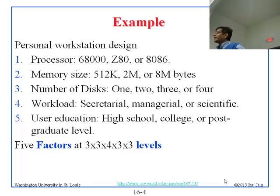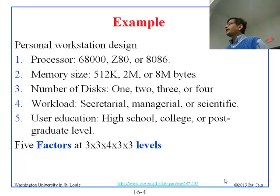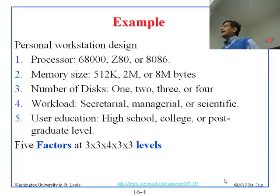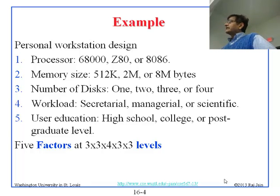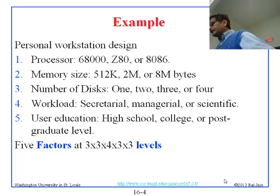One possibility would be to do every possible combination. We have five factors here, and each factor has some number of levels: three, three, three, four, and three levels. If you multiply that, you get 81 times 4 equals 324. You get 324 experiments.